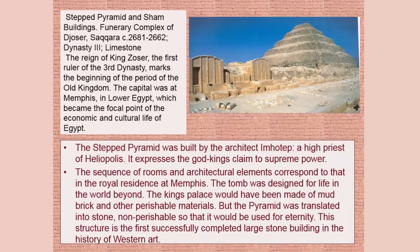This particular pyramid was built by an architect named Imhotep, who was a high priest, and it expressed the God King's claim to supreme power. There are two spellings — Djoser or Zoser — both referring to the same king, the first ruler of the Third Dynasty. His capital was at Memphis in Lower Egypt, which became the focal point of all Egyptian cultural life. This structure is the very first successfully completed large stone building in the history of Western art — that's one big reason why it's important.